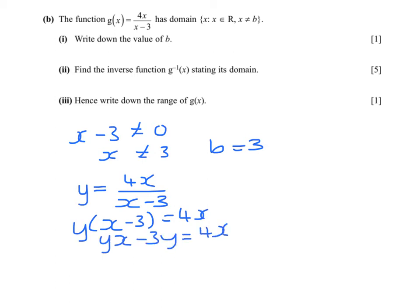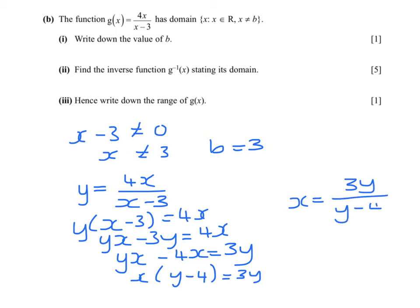Gather together all the x terms and gather together the y. So the 4x's come over here, the minus 3y over here. And if I factorize the left-hand side, they both have x in common. What I can then see is by dividing, x would be 3y divided by y minus 4.